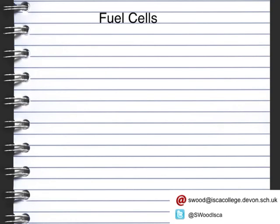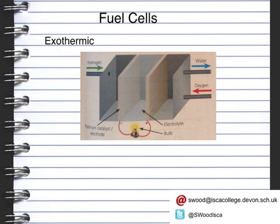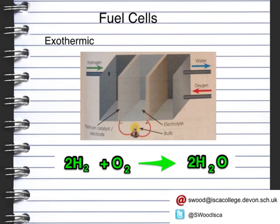Fuel cells are currently being developed in order to provide pollution-free energy. It's hopefully going to be used in cars and various other forms of transport. Now, a fuel cell uses hydrogen and oxygen and they react to form water. This reaction is extremely exothermic, meaning it gives out lots of energy. We can see in this diagram of a fuel cell that we have the hydrogen coming in here and the oxygen coming in here, so we end up with hydrogen plus oxygen gives us water.